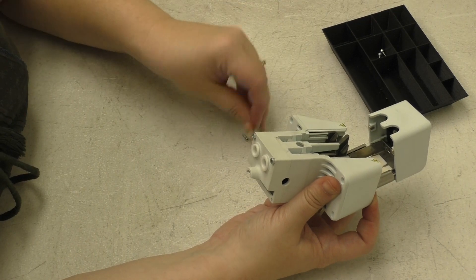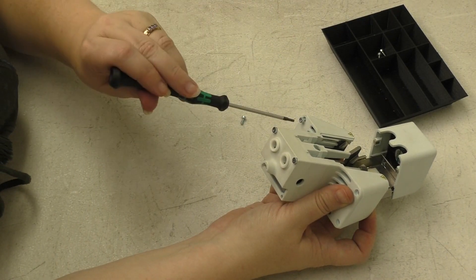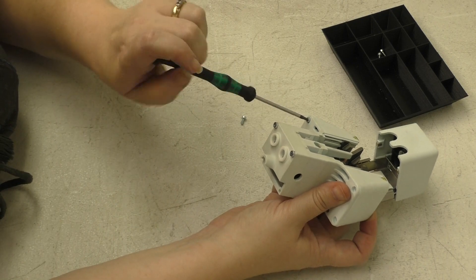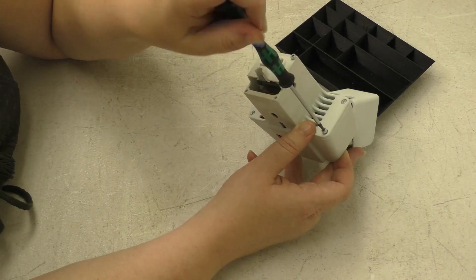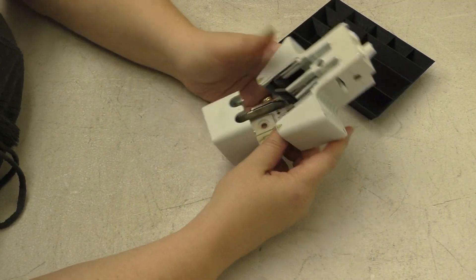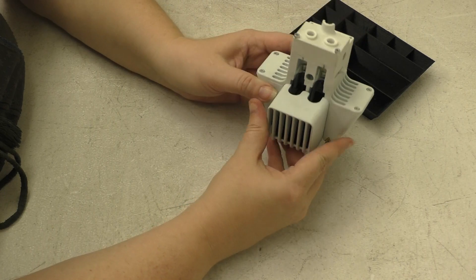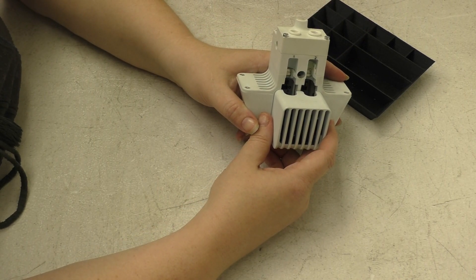Now we just have to put the four little screws back in. And there you have it. You've reassembled your printhead. Let's make sure the bracket closes good and you're ready to install it back in the printer.